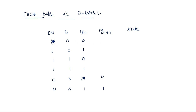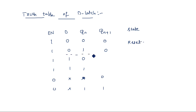When enable=1, the D Latch is in active state and works on the present inputs. When D=0, S=0 and R=1 — output is reset, so Q(n+1)=0, regardless of the previous state. When D=1, S=1 and R=0 — output is set, so Q(n+1)=1. The first two cases (D=0) give reset, and the next cases (D=1) give set.